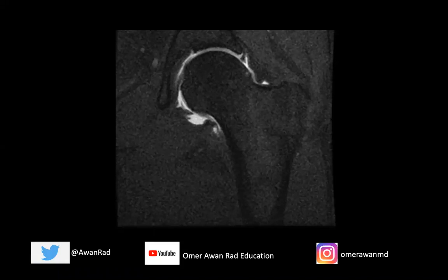Hello everyone and welcome to week 19 of MSK unknown case series. We have a great case today. You're looking at a coronal T1 fat sat weighted image of the left hip, and this is an MRI arthrogram. We've injected under fluoroscopy dilute gadolinium contrast, so we see contrast distending the left hip joint space, and we do that typically to evaluate for labral tears.